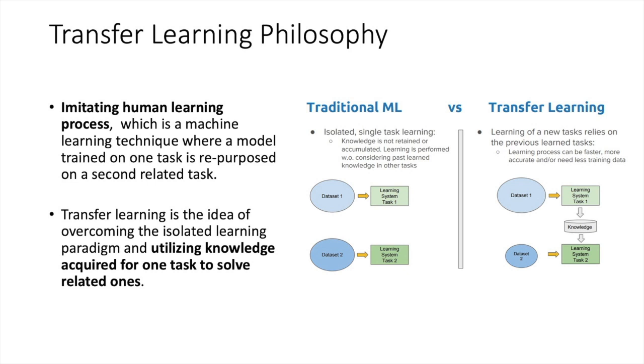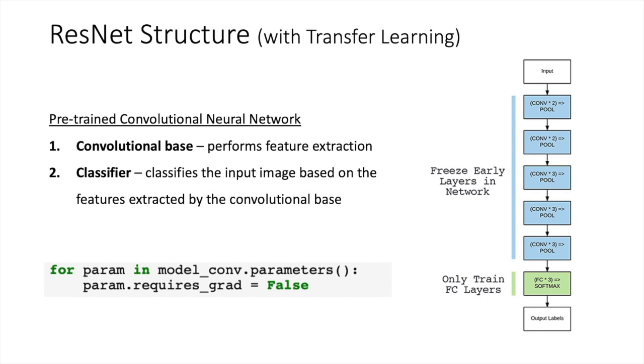So in this page, we want to more detailedly introduce transfer learning. And it is imitating human learning, which is that we learn something. And when we acquire the knowledge, we can apply the knowledge to our next task. So the transfer learning is a machine learning technique where a model trained on one task is repurposed on a second related task. And another idea of transfer learning is the idea of overcoming the isolated learning paradigm and utilizing knowledge acquired for one task to solve the related ones. And this will help us solve our data limitation problem.